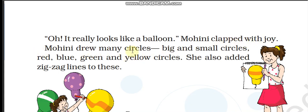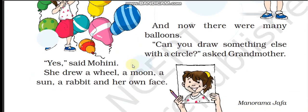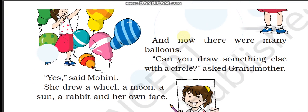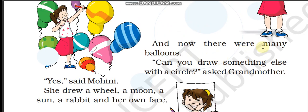Mohini drew many circles. Mohini ne bahut gole banaye. Big and small circles. Bade aur chote gole. Red, blue, green and yellow circles. Lal, blue, hara aur peela gola. She also added zig-zag lines to these. Usne in sab mein teedi meedi rekhaein bhi joodi. And now there were many balloons. Ab bahut balloons thay.